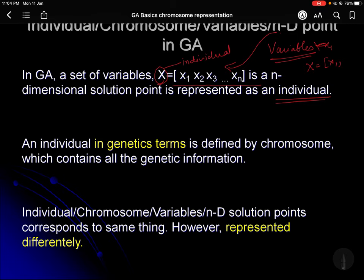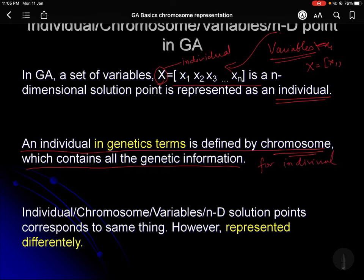In genetic terms, an individual is defined by a term called chromosome. That chromosome contains all the genetic information for an individual. So an individual in genetics terms is nothing but a chromosome, because it will contain all the information for an individual. Therefore, individual, chromosome, variables, and N-dimensional solution points all correspond to the same thing.